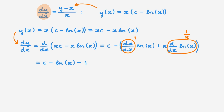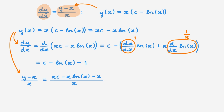In parallel, we evaluate the right-hand side of the equation (y − x)/x. Substituting our proposed solution, the factors of x cancel, and we end up with c − ln(x) − 1. Comparing the left-hand side with the right-hand side, we confirm that our solution is indeed correct. Hooray!